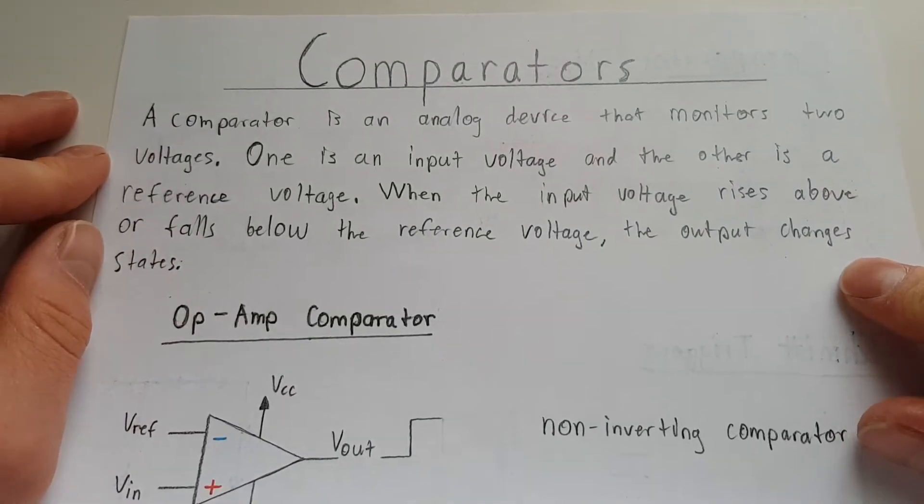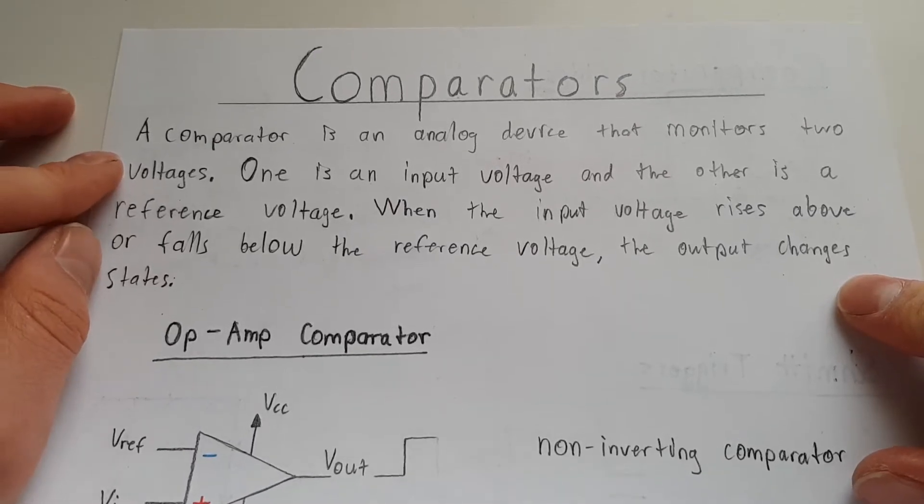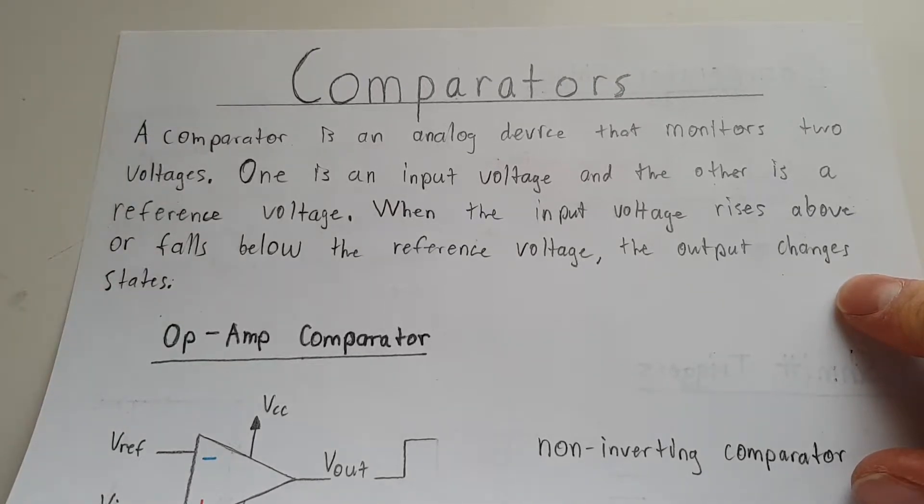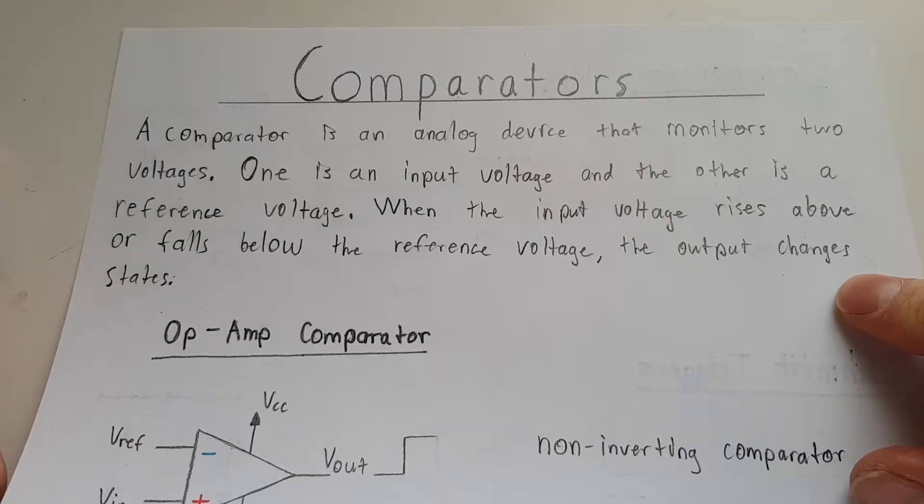Alright, comparators. A comparator is basically a device that monitors two different voltages, holds one as a reference, and the other one varies. And when it goes past that reference voltage in either direction, the output will indicate the change.